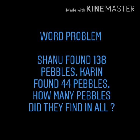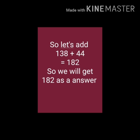Now children, let's see a word problem. Shanu found 138 pebbles and Kiran found 44 pebbles. How many pebbles did they find in all? In this word problem, Shanu found 138 pebbles and Kiran found 44 pebbles. They are saying in total how many pebbles they found. So we will add these two numbers, and it will give you 182. So we get our answer as 182.